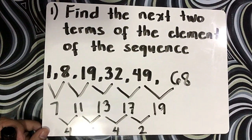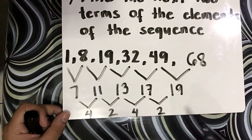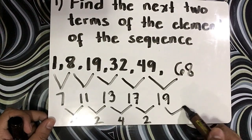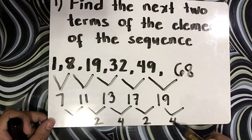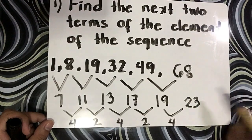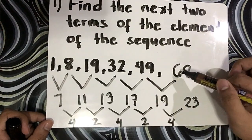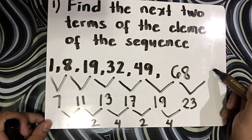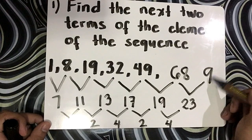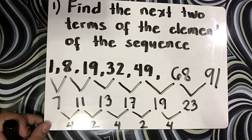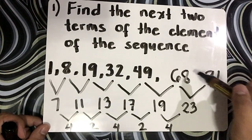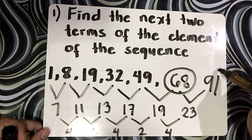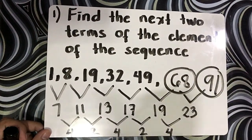Our pattern continues: 4, 2, 4, 2. So 19 plus 4 is 23. Then 68 plus 23 gives you 91. So our next two elements would be 68 and 91.